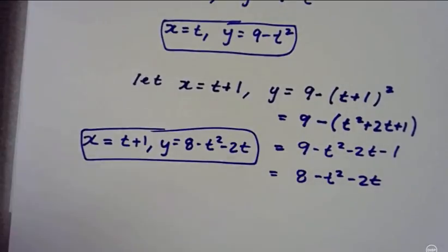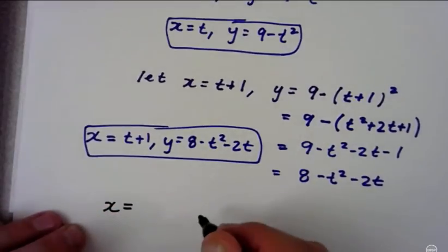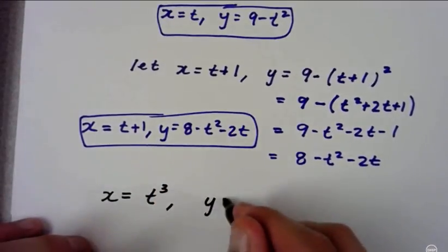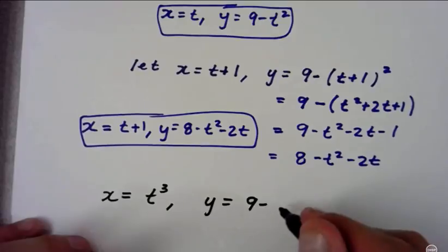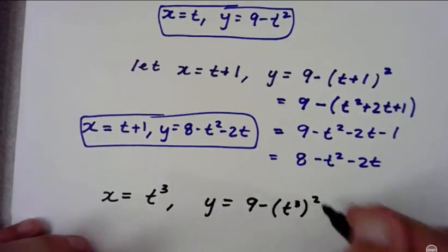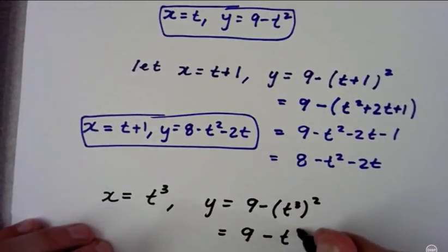And I could do it again. Let's let x equal t cubed. Well that means y would equal 9 minus—my x is t cubed, so t cubed squared—that would make it 9 minus t to the sixth.